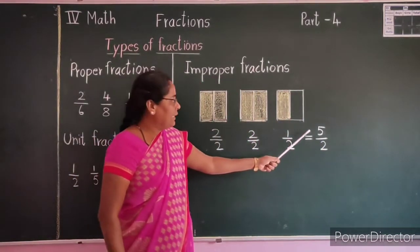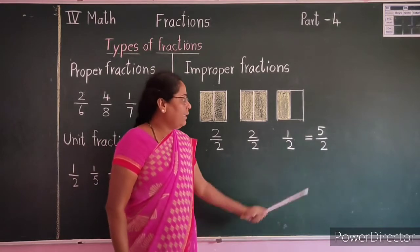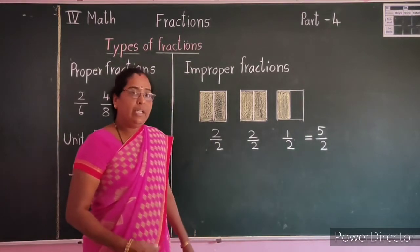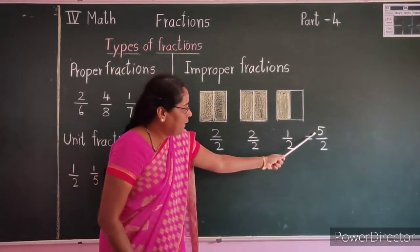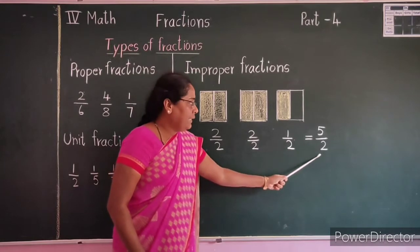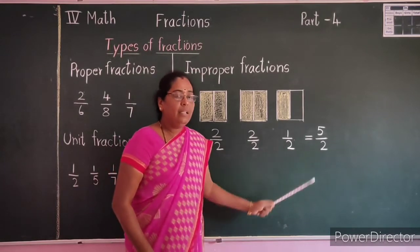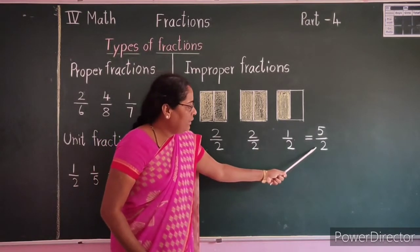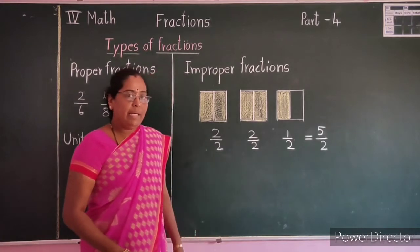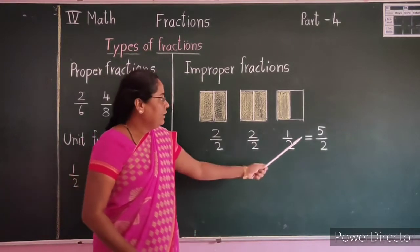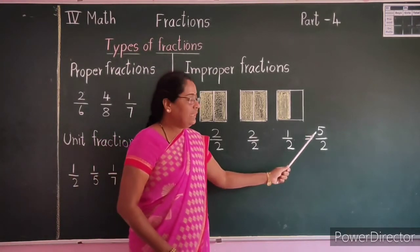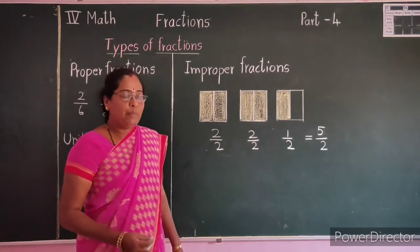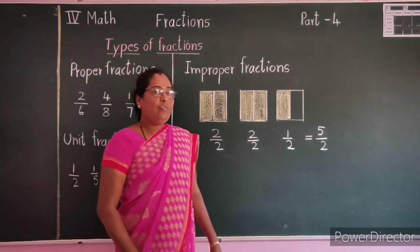Here, children — 5 is the numerator and 2 is the denominator. The numerator is greater than the denominator. These types of fractions are called improper fractions.